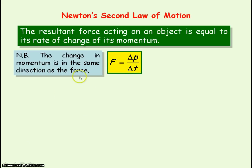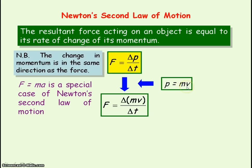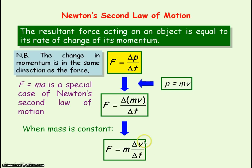It's important to note that the change in momentum is in the same direction as the resultant force. F equals MA is a special case of Newton's Second Law. Since momentum is mass times velocity, substituting into the equation gives force equal to the change in MV divided by the time taken. Assuming mass is constant, we can take it outside the brackets, leaving M times delta V over delta T, which is acceleration. So F equals MA when mass is constant.